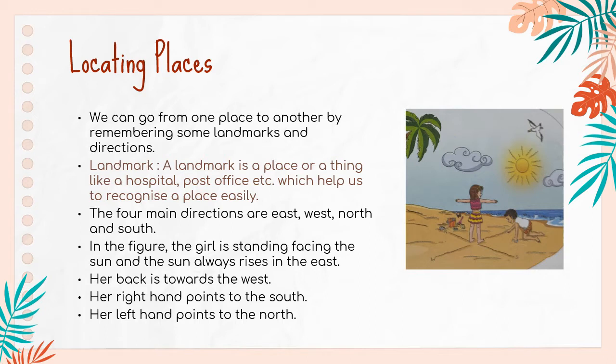The four main directions are East, West, North and South. In the figure, the girl is standing facing the sun, and the sun always rises in the east. Her back is towards the west. Her right hand points to the south and her left hand points to the north.